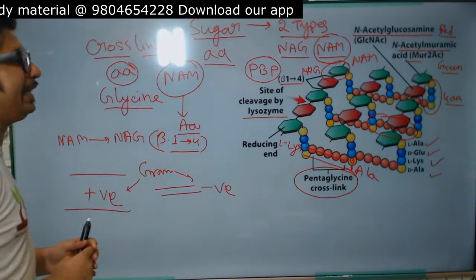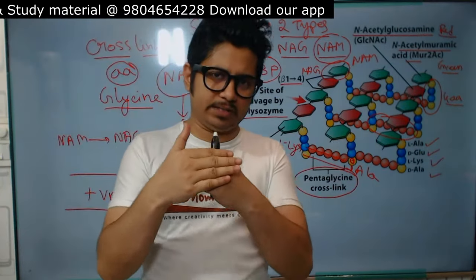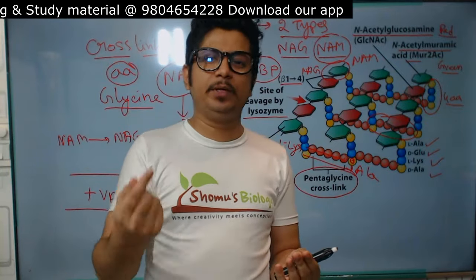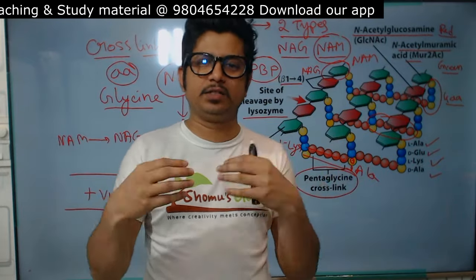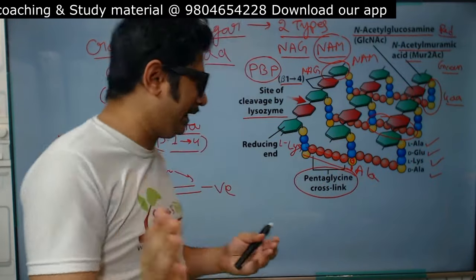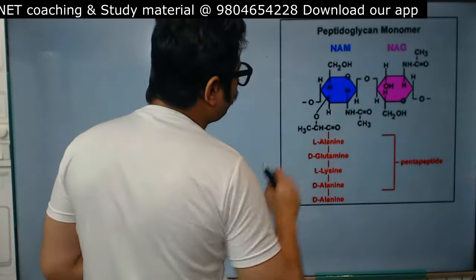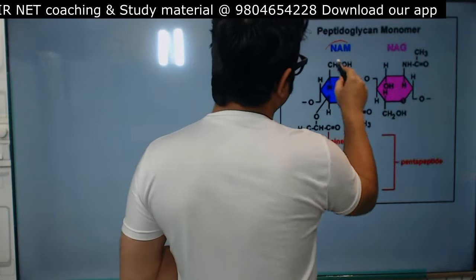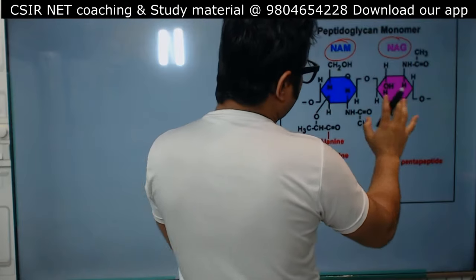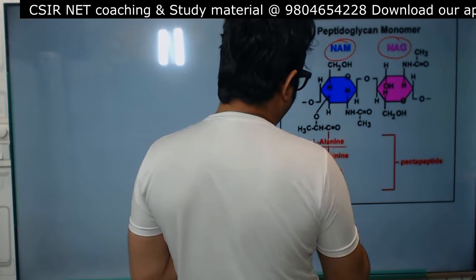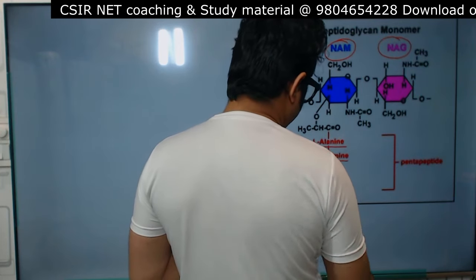The peptidoglycan layer is the target for many antibiotics because without the cell wall the bacteria cannot survive. We simply destabilize the cell wall synthesis or destabilize the existing cell wall, causing pore formation and ultimately death of the cell due to osmotic imbalance. You can clearly see how the monomer looks like between NAG and NAM. In NAG, there is nothing attached, but in NAM there is the structure of L-alanine, D-glutamine, L-lysine, and D-alanine.